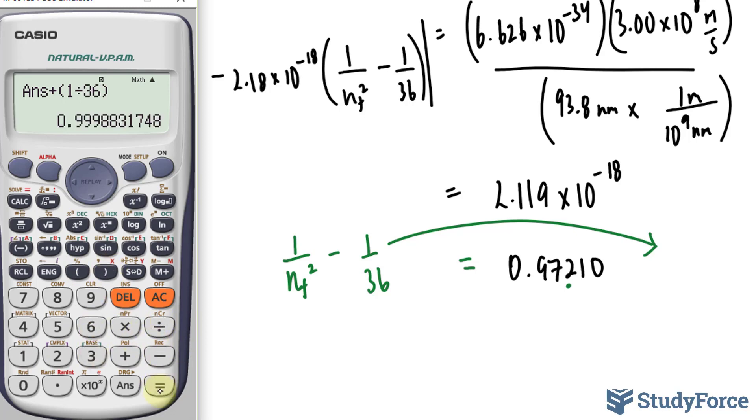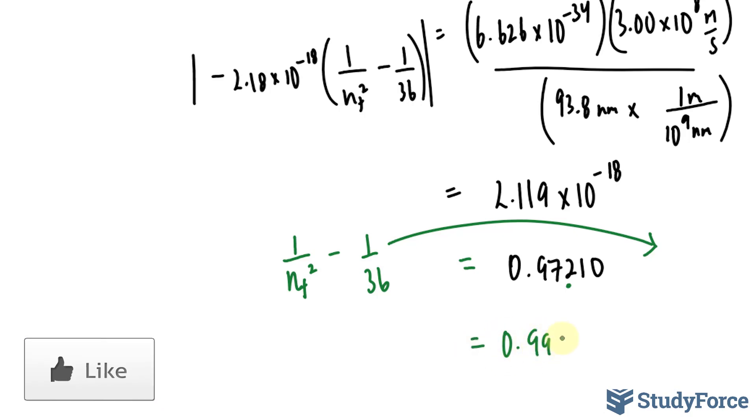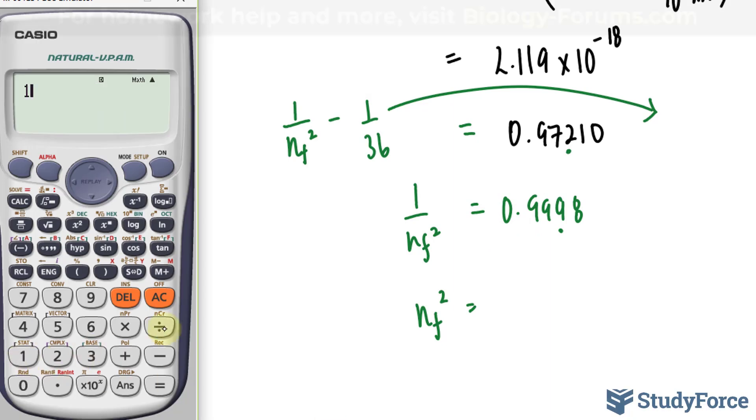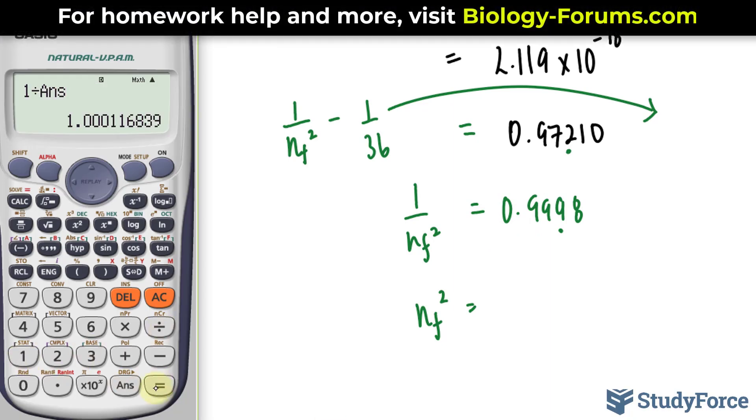Now, of course, if you don't have a calculator like this, it's going to take longer to do. We end up with this number, and so I have 0.9998 to 3 significant figures. I'll just put a dot. I'm not ready to completely round off. 1 over n sub f, and now I will reciprocate both sides. If I reciprocate this side, I end up with nf squared, and if I reciprocate this side, I'll make this 1 over the number that I just found.